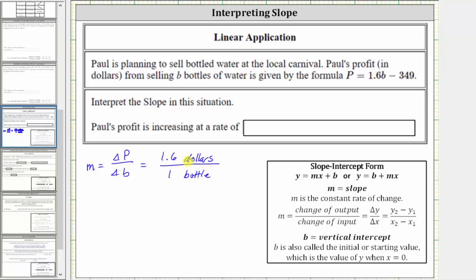And now to interpret the slope, the slope is telling us the profit P increases by 1.6 dollars each time b, the number of bottles sold, increases by 1. So the meaning of the slope is the profit is increasing at a rate of 1.6 dollars per bottle.